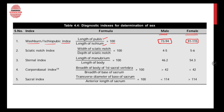If the ischiopubic index is between 91 to 115, then the bone belongs to a female. Next we have the sciatic notch index, in which the width of the sciatic notch is measured, then the depth of the sciatic notch is measured, it is divided and then multiplied by 100. If it is between 4 to 5, then the body is male.